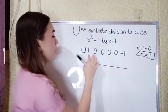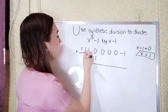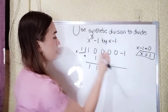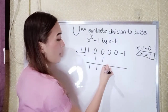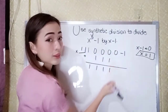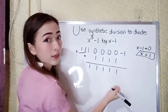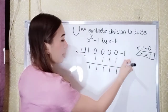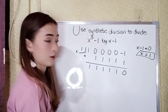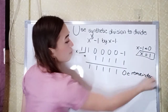Bring down 1. 1 times 1 is 1. 0 plus 1 is 1. 1 times 1 is 1. 0 plus 1 is 1. 1 times 1 is 1. 0 plus 1 is 1. 1 times 1 is 1. 0 plus 1 is 1. Then 1 times 1 is 1, and negative 1 plus 1 is 0. Our remainder is 0, so we have no remainder.